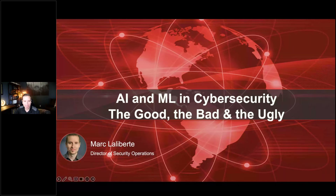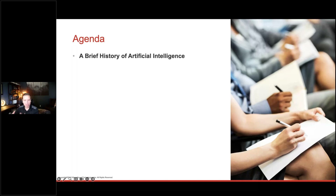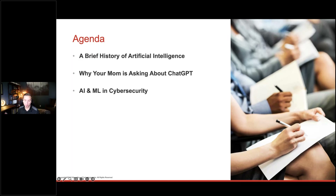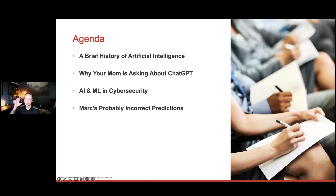For our agenda today, we're going to start off with a brief history of artificial intelligence — where did it all originate, really several decades ago. Once we've laid that foundation, we'll go into what I call why your mom is asking about ChatGPT, which is how ChatGPT and large language models and generative AI exploded in popularity in the last few years. Then we'll talk about AI and machine learning specifically in cybersecurity. Then we'll talk about my probably incorrect predictions around artificial intelligence and where I think we'll see a lot of use for these generative AI models. And finally, we'll end with a bit of Q&A time.